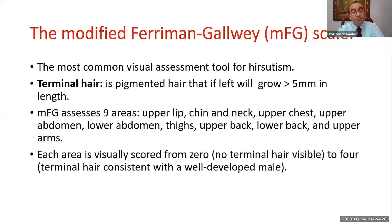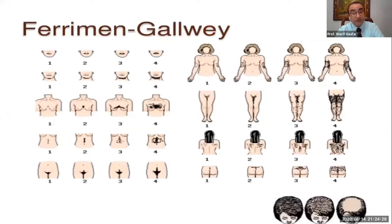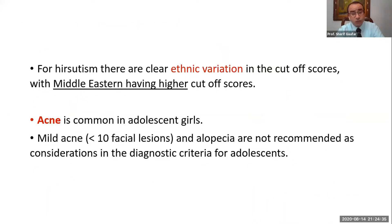Every area takes a score from zero — which is no terminal hair at all — to four, which is well-developed male pattern. By adding scores in these nine areas you reach the Ferriman-Gallwey score. We should know that we are Middle Eastern and we have higher cutoff scores due to ethnic variation.